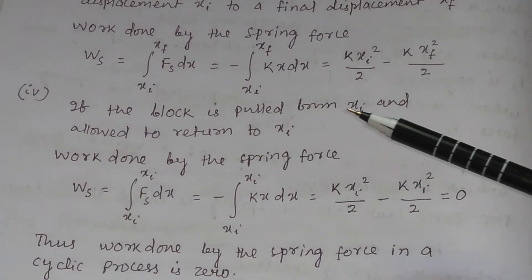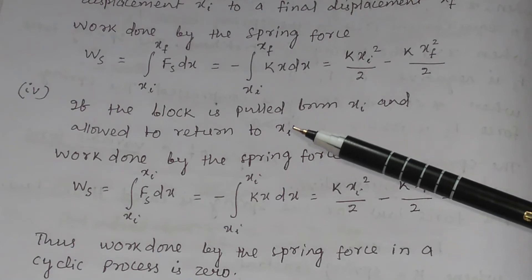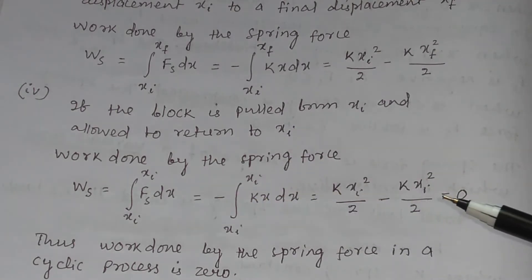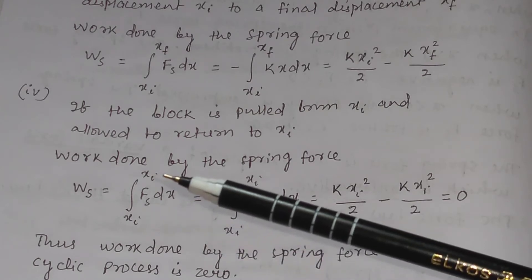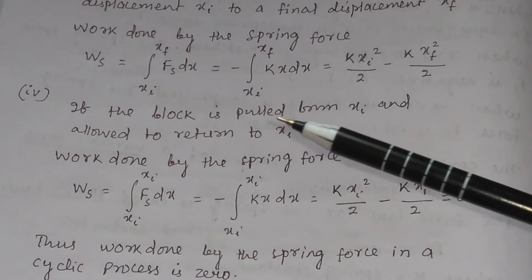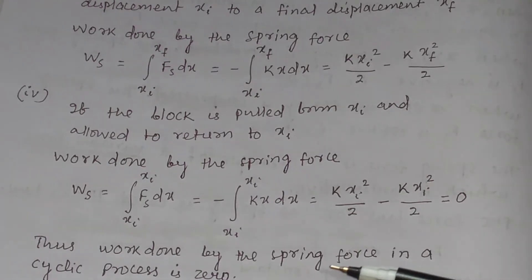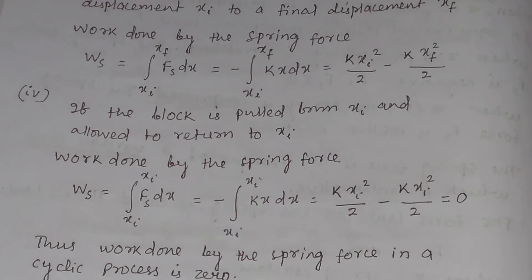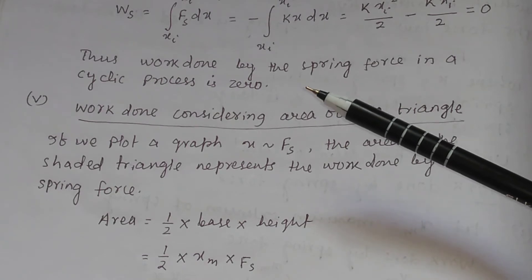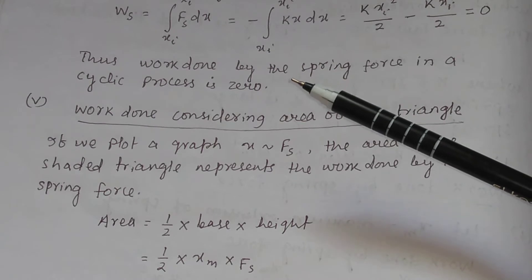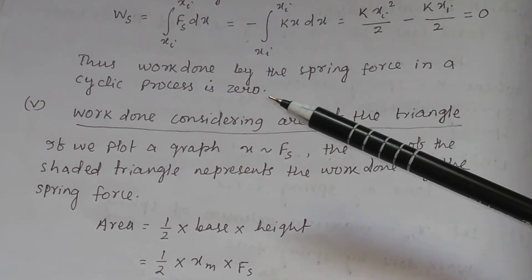If the block is pulled from initial position xi and allowed to return to the same initial position xi, the work done by the spring force equals 0. Thus, work done by the spring force in a cyclic process is 0. This confirms that the spring force is conservative, since for a conservative force the work done in a cyclic process is always 0.